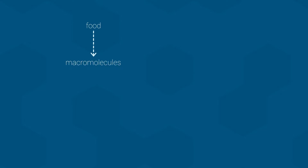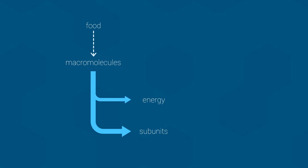When we eat food, what we are really eating is macromolecules such as proteins, carbohydrates, and so on. Our bodies, and indeed all organisms, break down these macromolecules into subunit molecules. This process also extracts energy from the food. This is what most people think of when they think of metabolism, but in fact this is only half of the story.